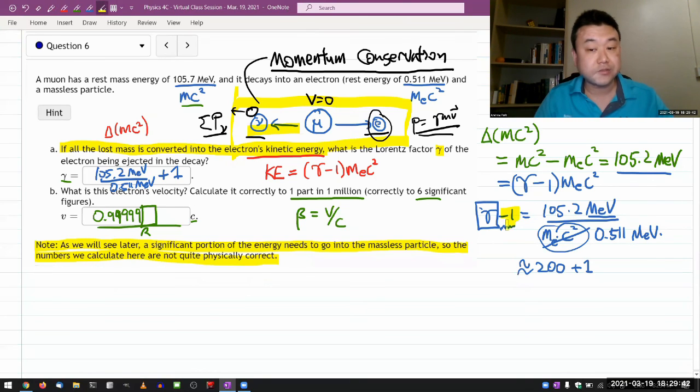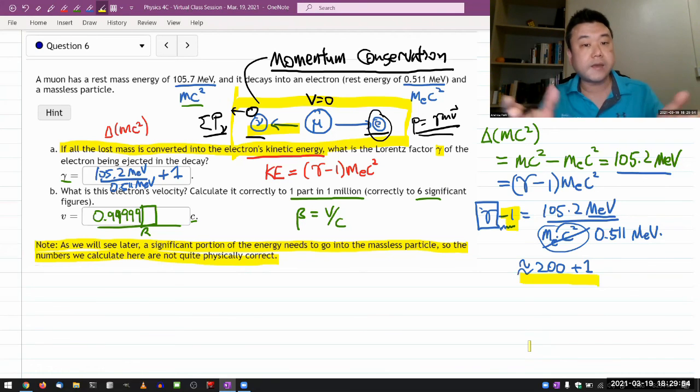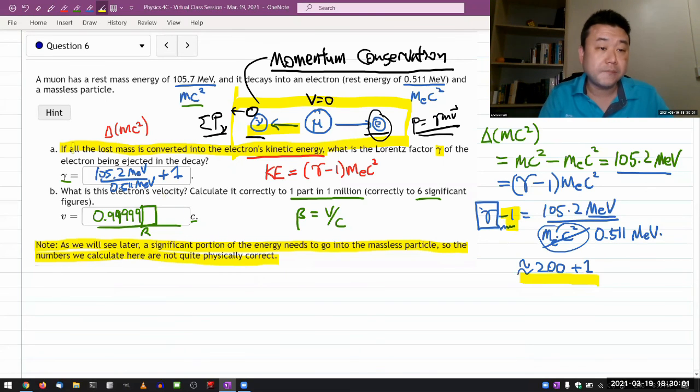And you saw a hint of that here, that the mass of the electron actually didn't really matter all that much in the grand scheme of things. So we have a different question that I wrote that's not from the textbook that actually treats a situation like this in a fully correct way. So you will see that. But for the purpose of this question, the assumptions that they're asking you to make, that makes it easier, which is why the question asks you to make those assumptions.